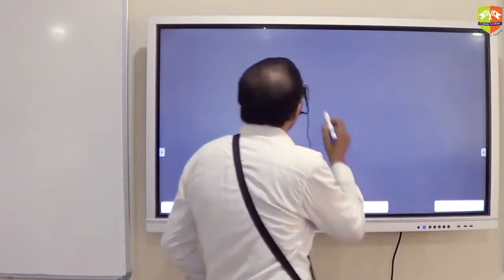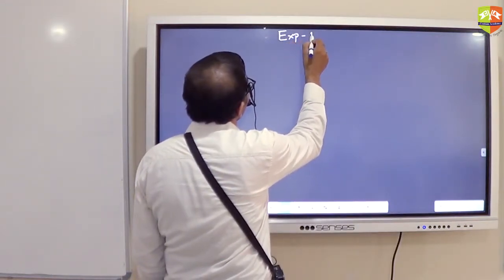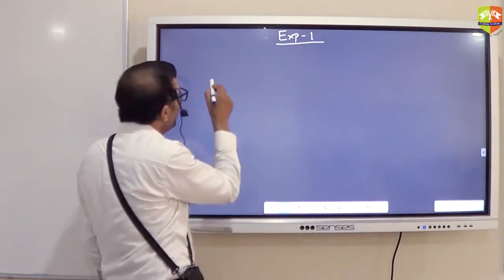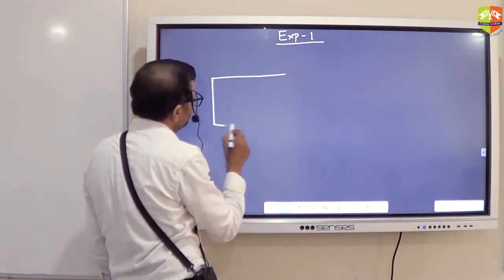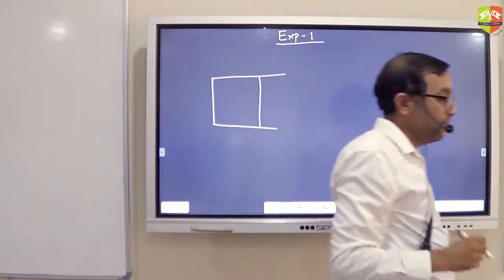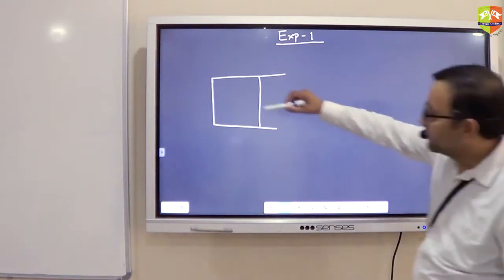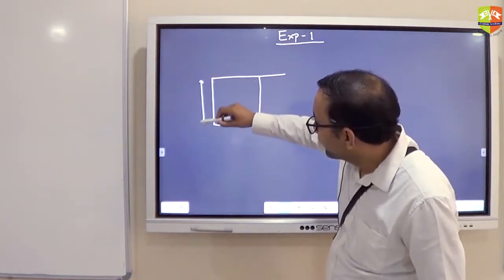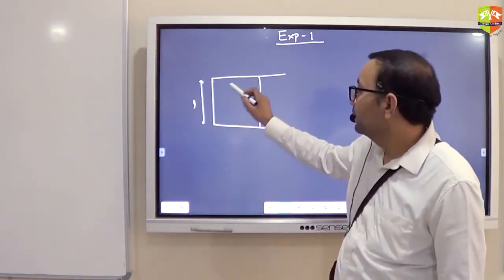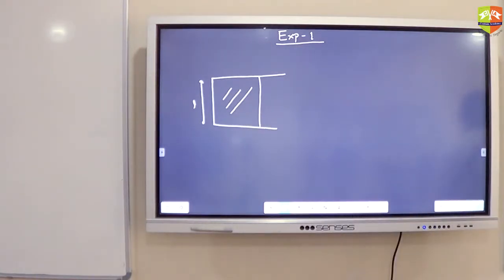Please draw this experiment 1. You have a frame like this, a frame like this. This length is L, this is L and this is a film, do you know what is a film?